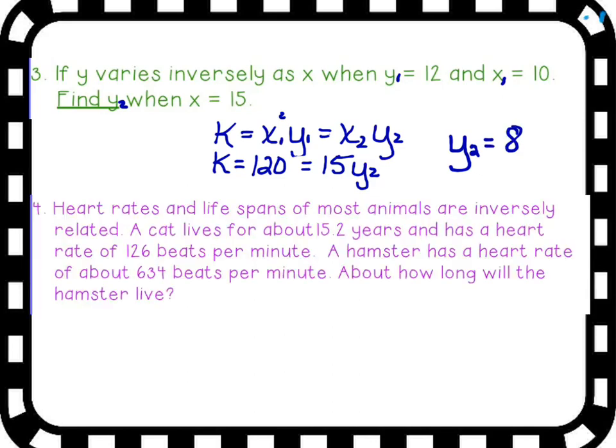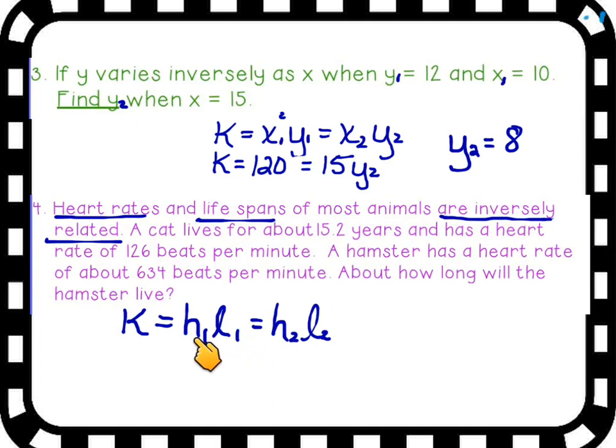All right. Here's an interesting piece of information, heart rates and lifespans. Believe it or not, an animal's hearts beat at a different rate of speed, and as a result of that, it determines the span of their life. For example, in this one, it's saying that a cat lives for about 15 years and has a heart rate of 126 beats per minute, whereas a little hamster has a heart rate of 634 beats per minute. So you can tell that this guy's little heart is beating a lot faster, so its lifespan is not going to be quite as long. And it is inversely related. So the two things that we're comparing in this problem is heart rates with lifespans. And so I'm going to set up this constant of variation. I'm going to use heart rate, lifespan.